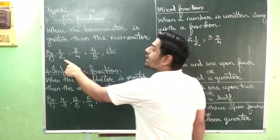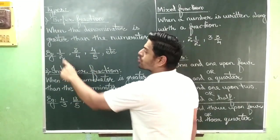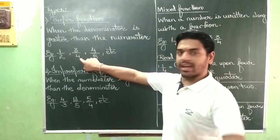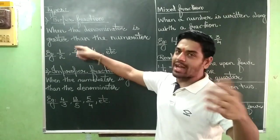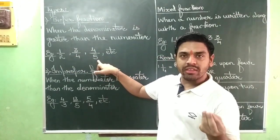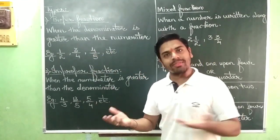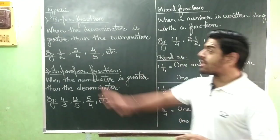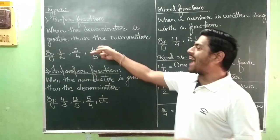For example, if a question is worth 5 marks and you score 4 marks, you write 4 upon 5. This is correct. The denominator is greater than the numerator.